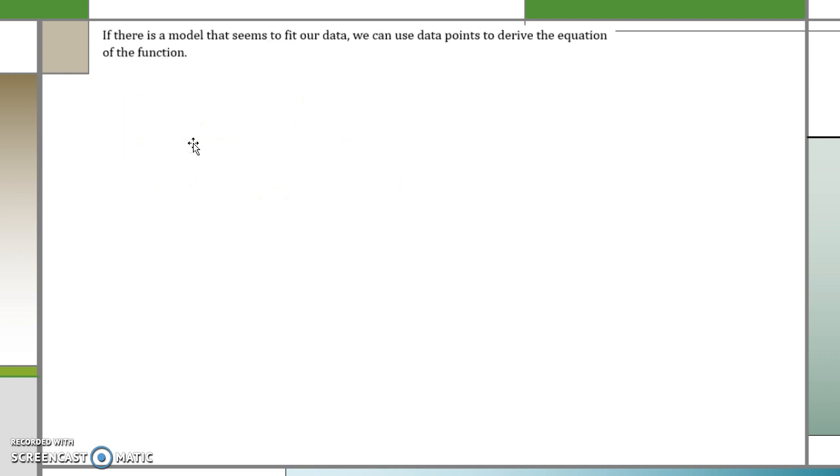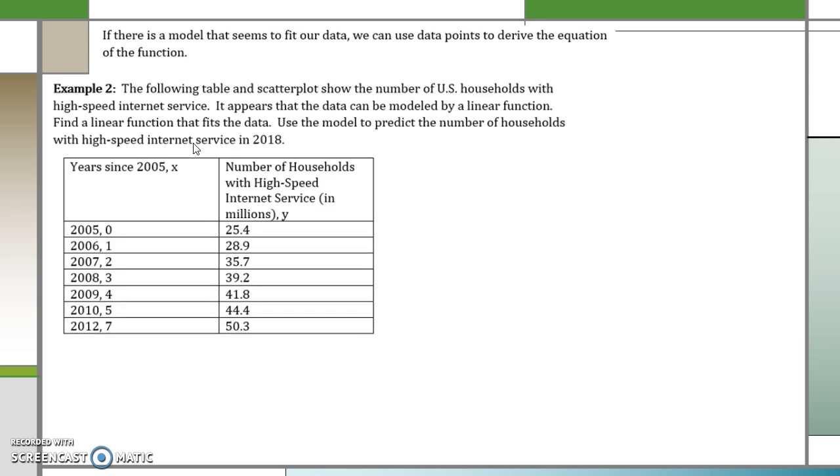If there is a model that seems to fit our data, we can use data points and derive the equation of the function. Now this could be a manual process but we're going to particularly use Desmos to help us. So the following table and scatterplot shows the number of households with high-speed internet service. It appears that our data can be modeled by a linear function. So let's find a linear function that fits the data and use the model to predict the number of households with high-speed internet service in 2018. I'm going to use Desmos to push this information together.